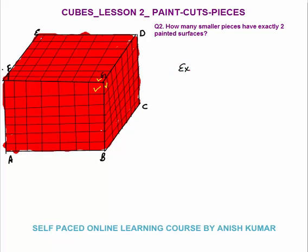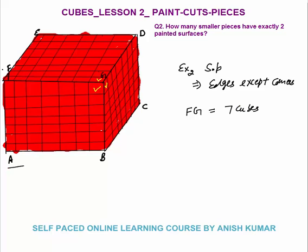The second question is: how many smaller pieces have exactly 2 painted surfaces? Exactly 2-surface-painted cubes will be those lying on the edges except corners — we leave the corners because corner cubes have 3 surfaces painted. We have 12 edges. Taking edge FG, there are 7 cubes on each edge, as you can see on AB, BC, and CD — there are 7 smaller cubes on each, giving 7×7×7 = 343 pieces total.